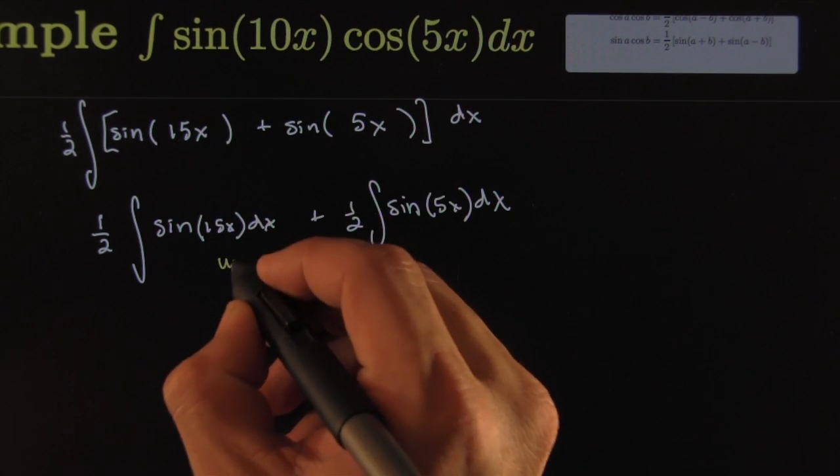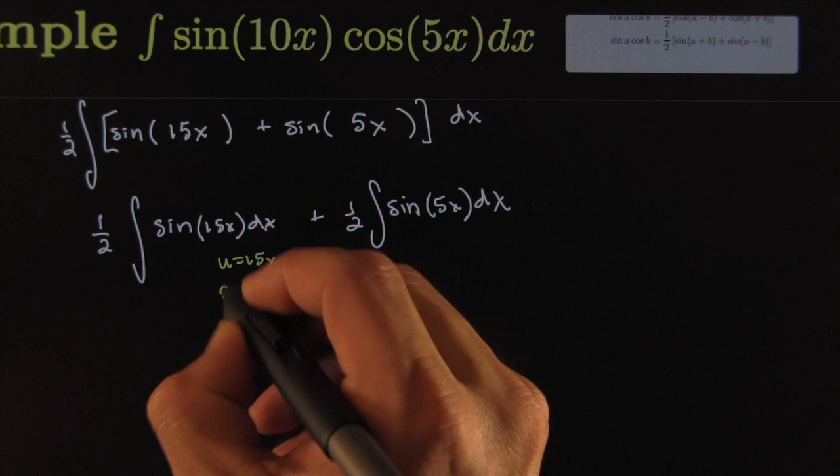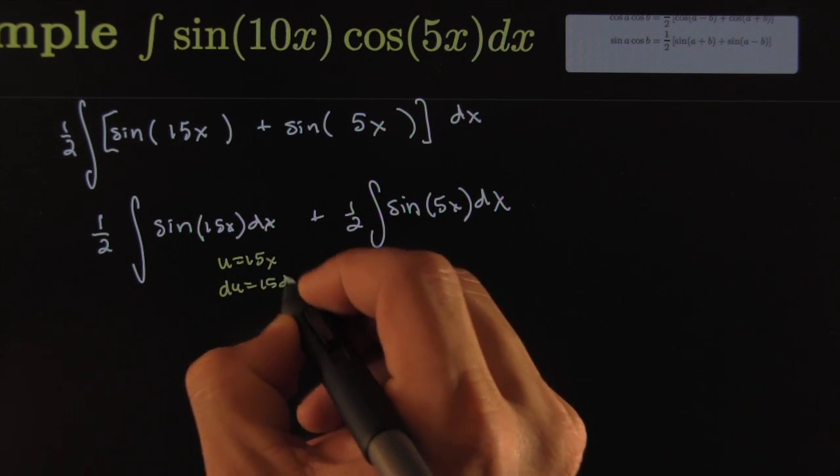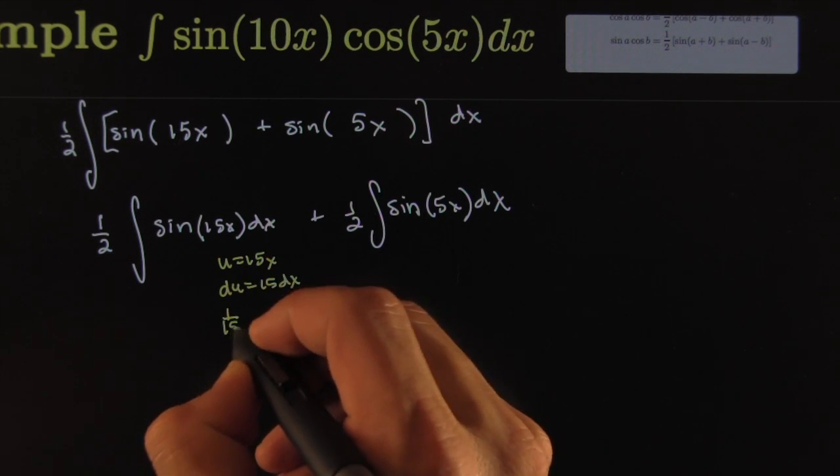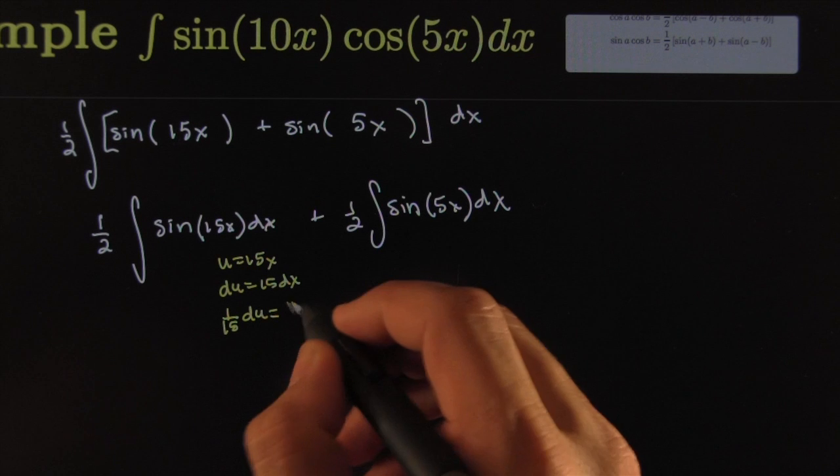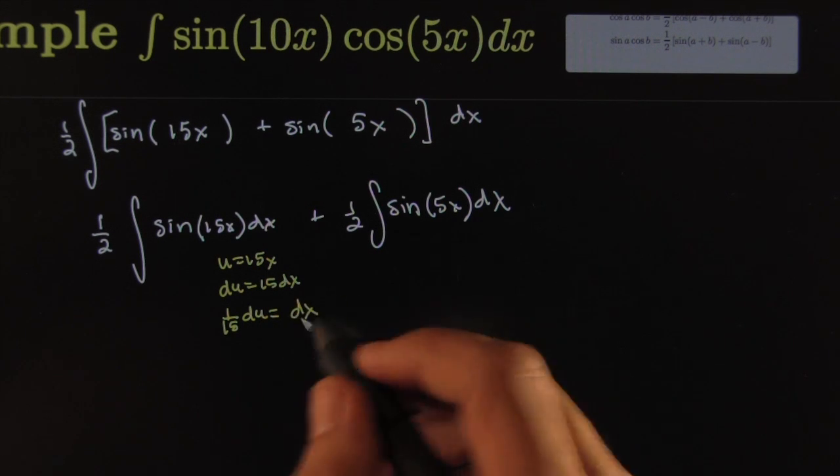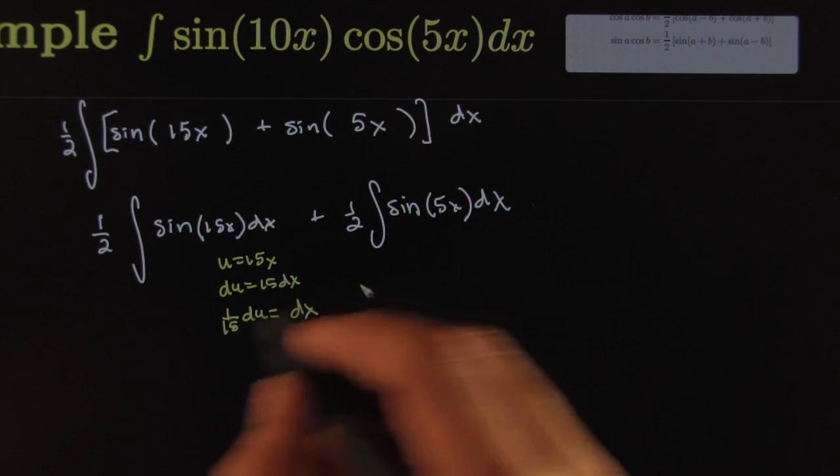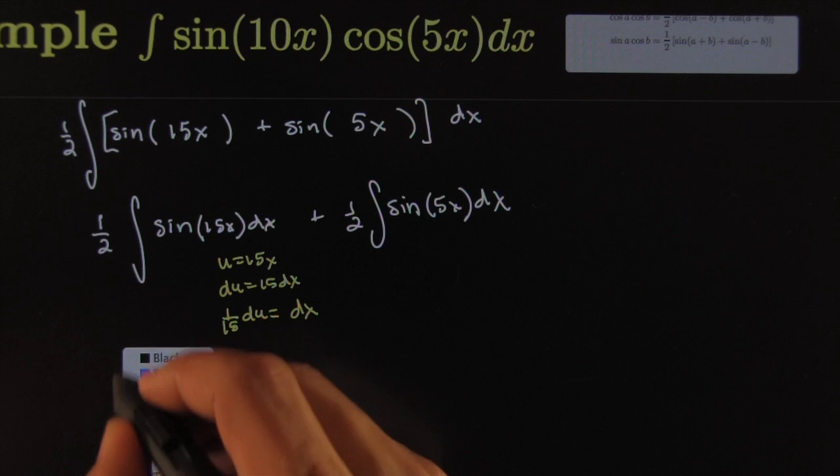You would make u equal to 15x, then your differential would be 15dx. So one over 15 times du would be an even exchange rate for a dx differential.